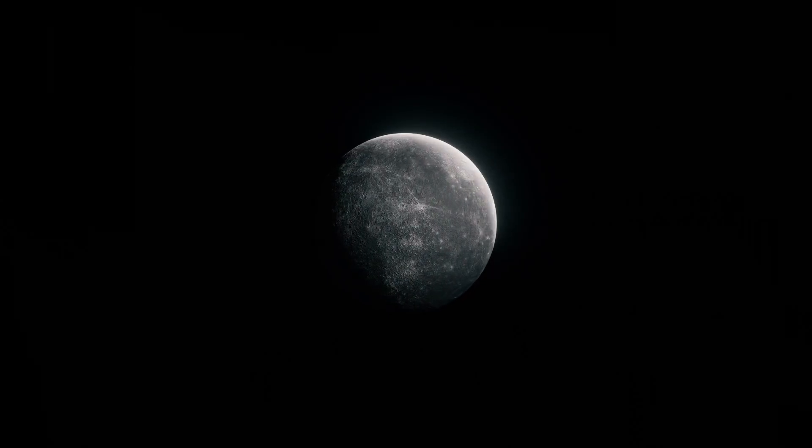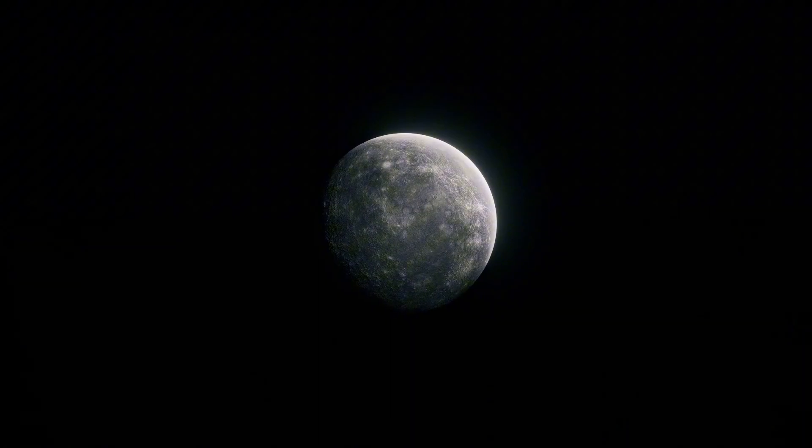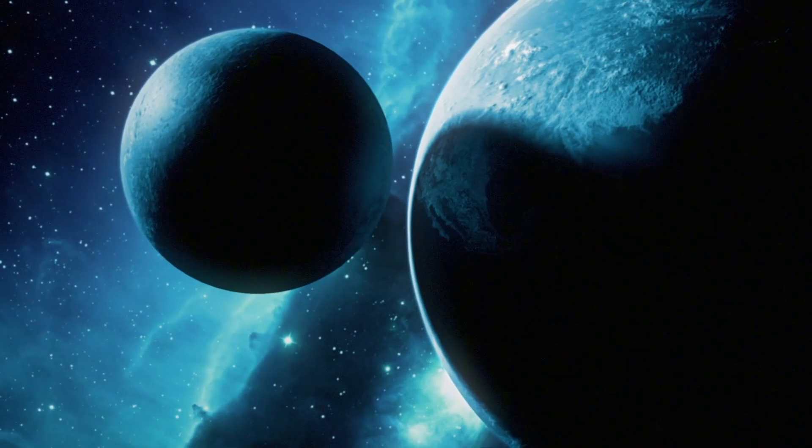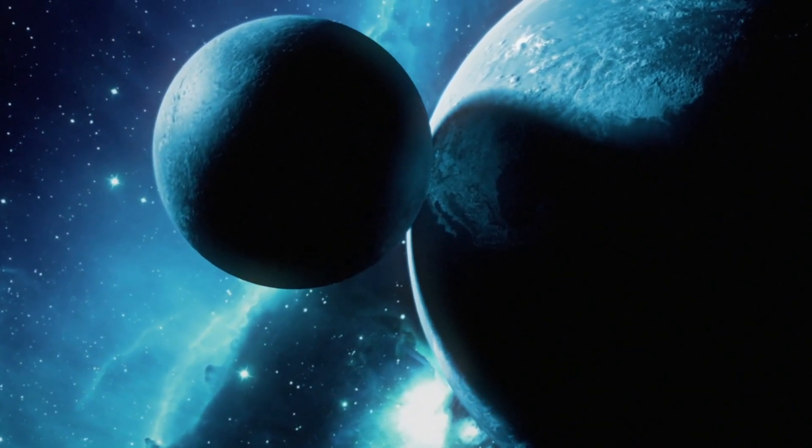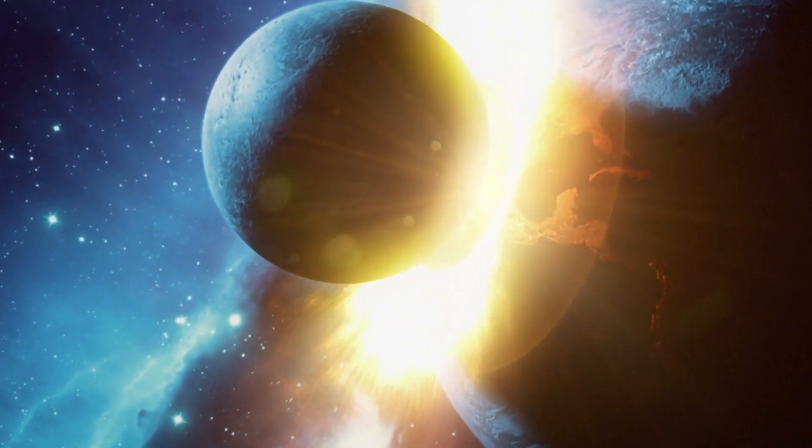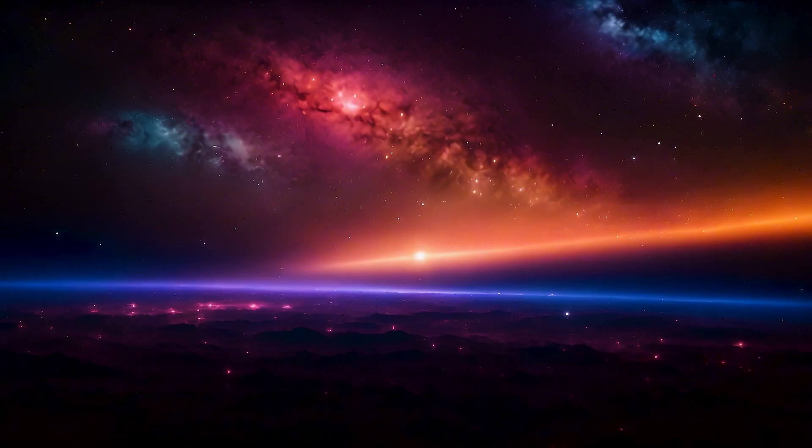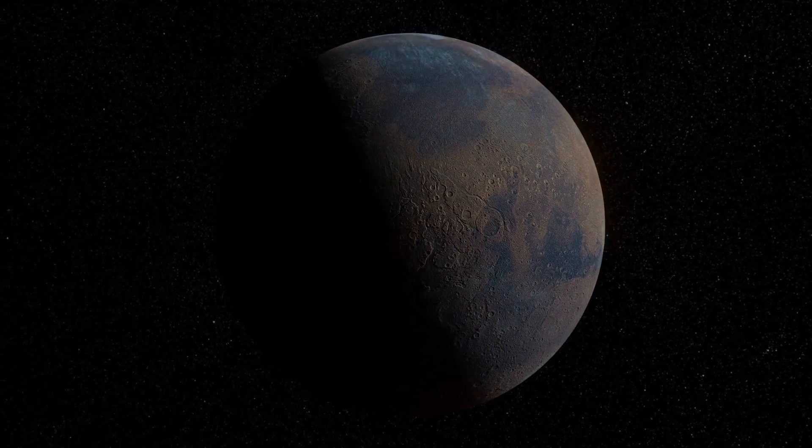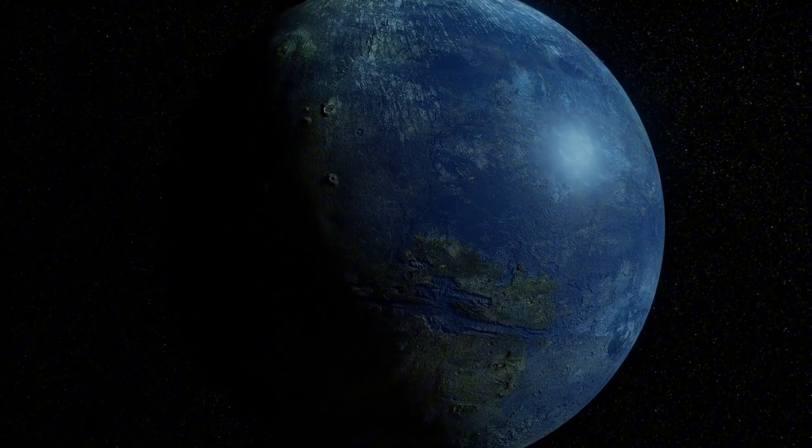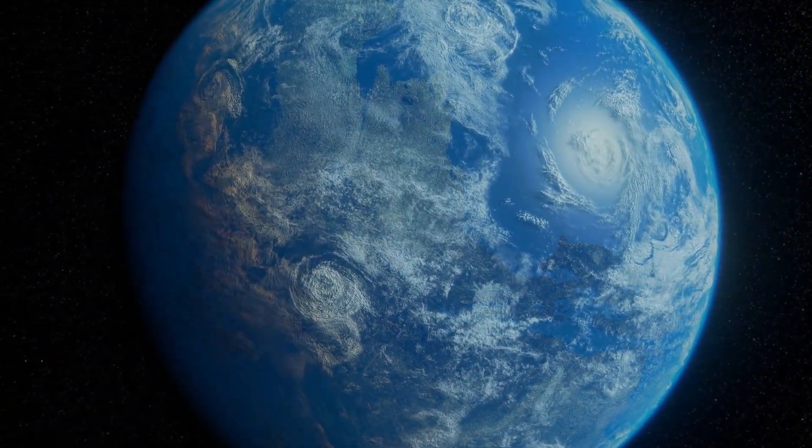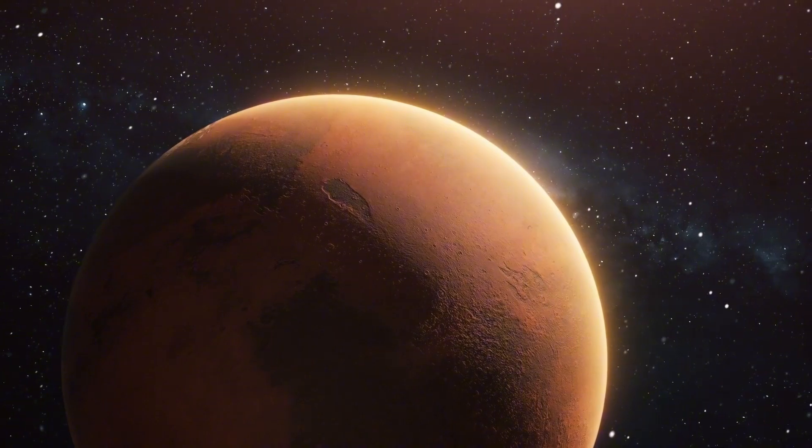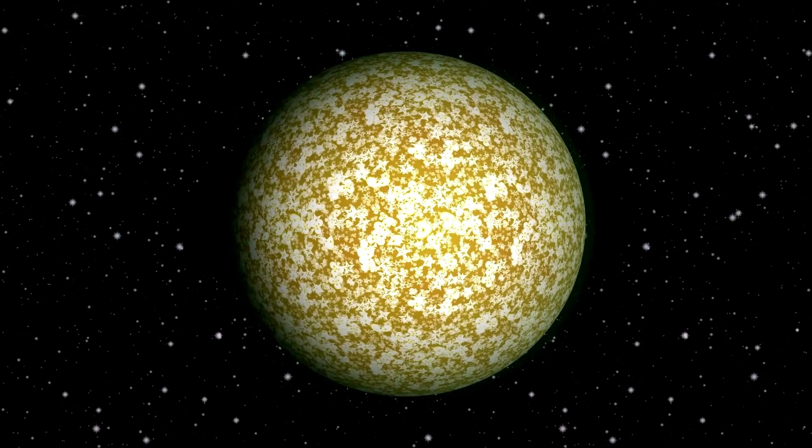Proxima b is significantly smaller and dimmer than our Sun, which affects the configuration of its habitable zone. This unique characteristic means that the habitable zone is much closer to the star than in our solar system. Proxima b orbits at approximately 4.5 astronomical units from Proxima Centauri, leading to an orbital period of about 11.2 Earth days. Proxima Centauri is known for its active nature, producing violent solar flares that could pose challenges to the potential habitability of Proxima b. Additionally, the exoplanet's close proximity to its star results in extreme temperature variations, with the daytime side being scorching hot and the nighttime side freezing cold.